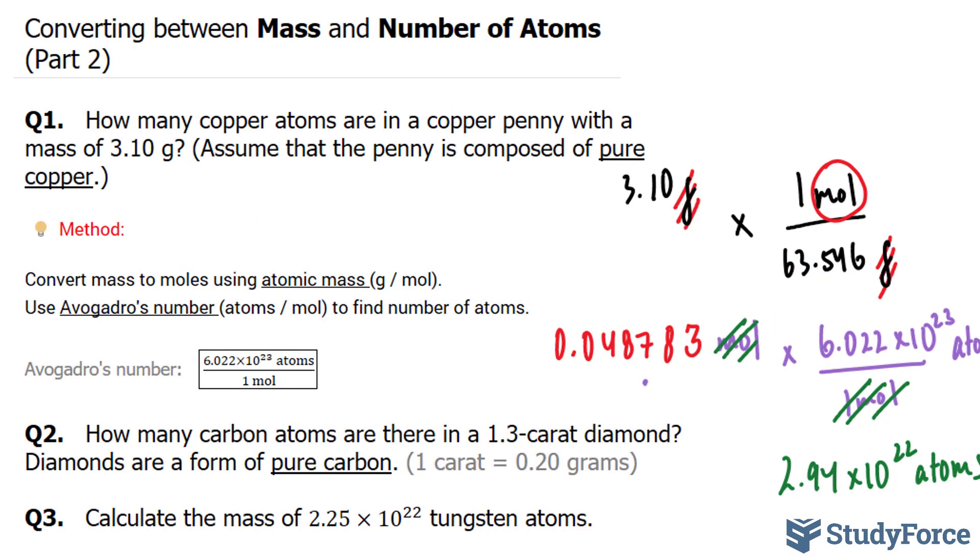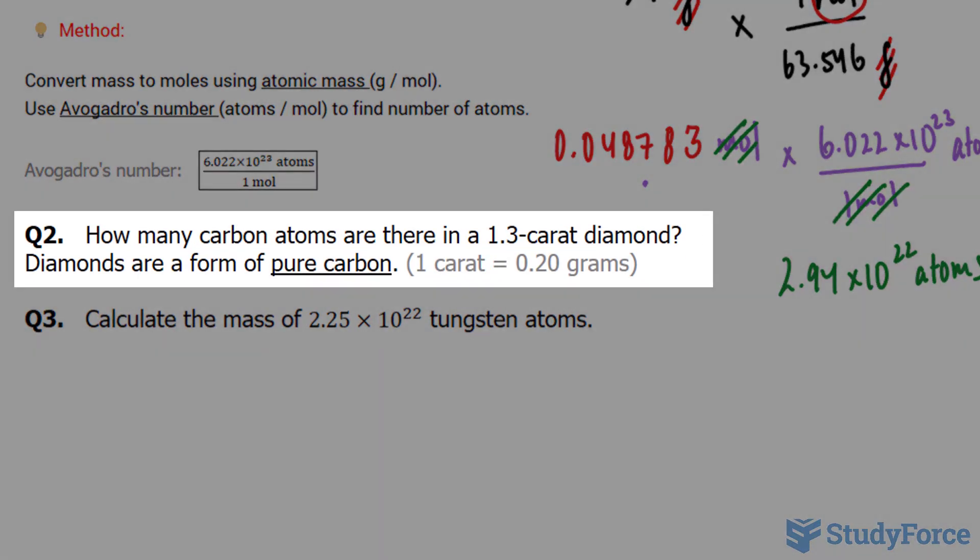In part 2 of this lesson, we'll continue answering the questions. We ended off with questions 2 and 3. We'll start with question 2. How many carbon atoms are there in a 1.3 carat diamond? Diamonds are a form of pure carbon.